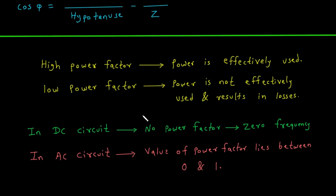Finally, let's consider the difference between DC and AC circuits. In a DC, or direct current, circuit, there is no concept of power factor. This is because the voltage and current are constant, and there is no frequency, so there can be no phase difference. In an AC, or alternating current, circuit, the value of the power factor always lies between 0 and 1. A power factor of 1, or unity, is the most efficient, while a power factor of 0 means no real work is being done.